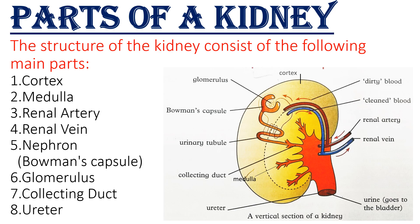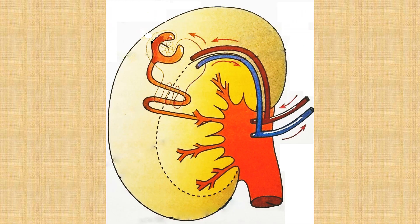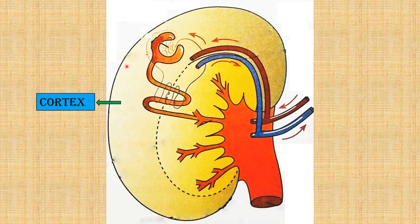Now let's discuss the function of each part of the kidney. The first part is the cortex. The cortex is the outer region of the kidney, which contains millions of tiny tubes called the nephron.